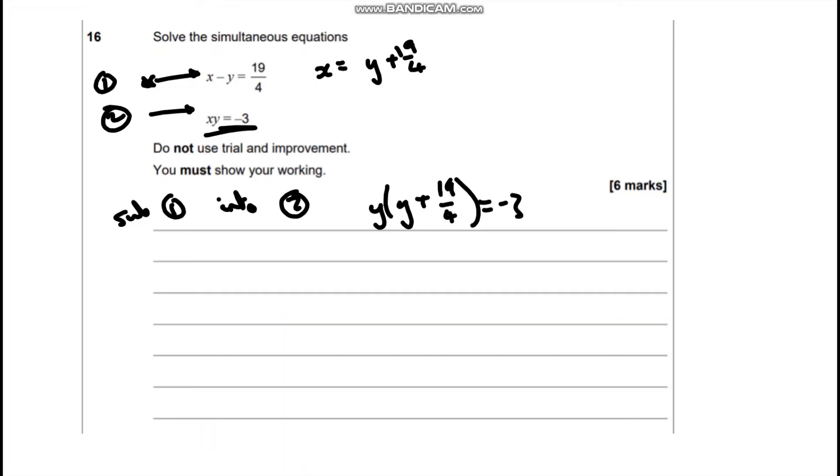So I'm going to expand this: y squared plus 19 over 4y. And I'm going to add 3 to both sides, so we've got ourselves a quadratic equation. I'm going to multiply both sides by 4 to clear the fraction. So we're going to end up with 4y squared plus 19y plus 12 equals 0.